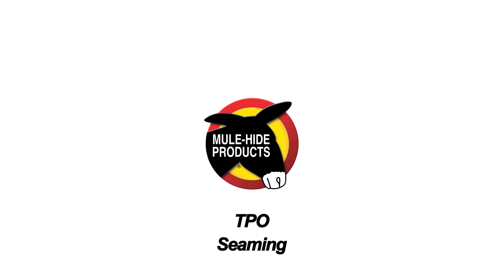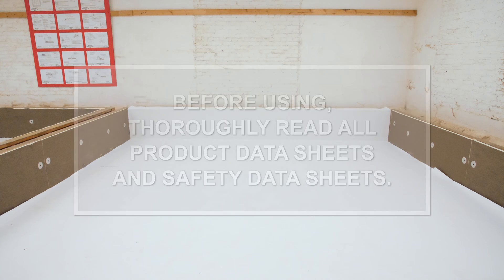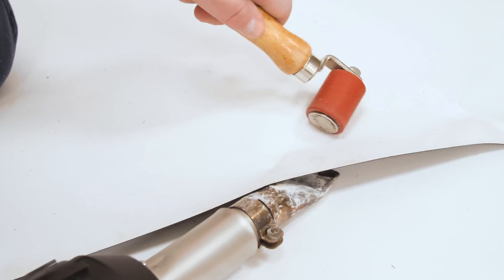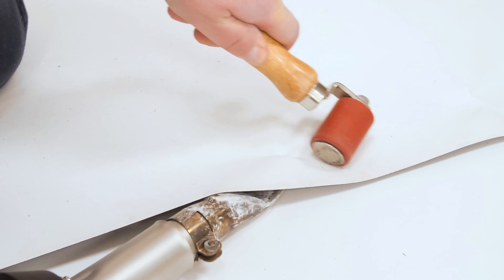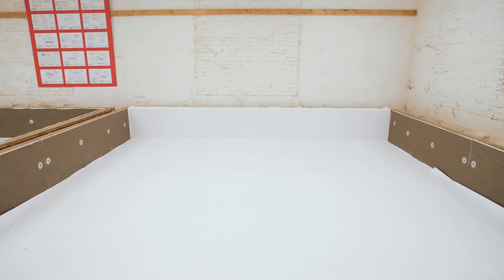TPO seaming. TPO is a thermoplastic membrane and performs best when hot air welded together at the seams. Mulehide does not approve the use of adhesives or tapes in any TPO to TPO seam.